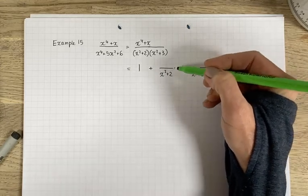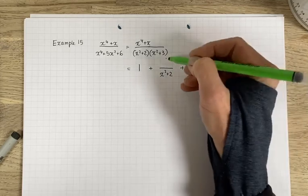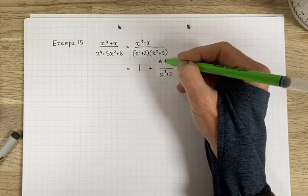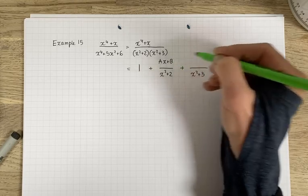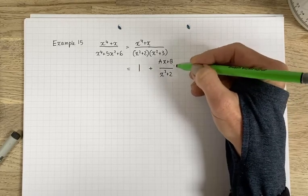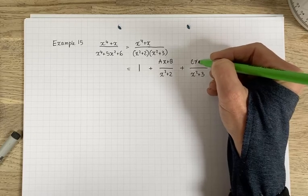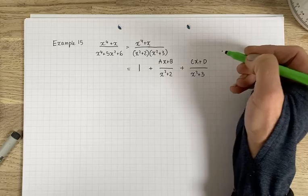Right, so what have we got here? We've got a quadratic in both cases in the denominator, so that tells me that in the numerator I can have at most a linear expression without it going into improper fraction. So cx plus d.